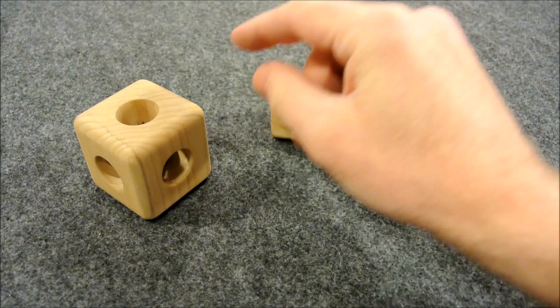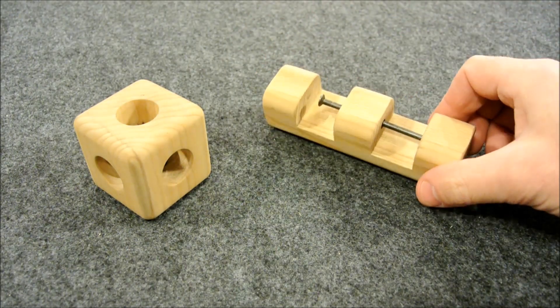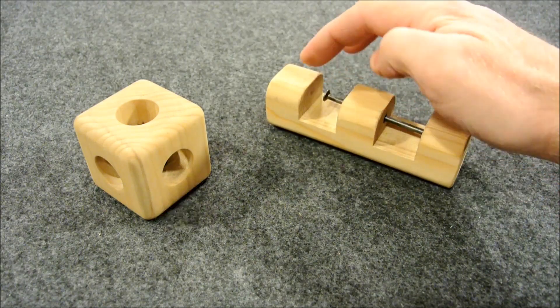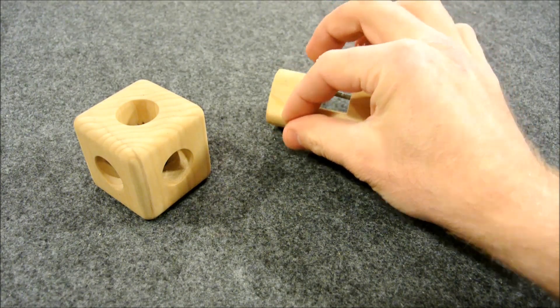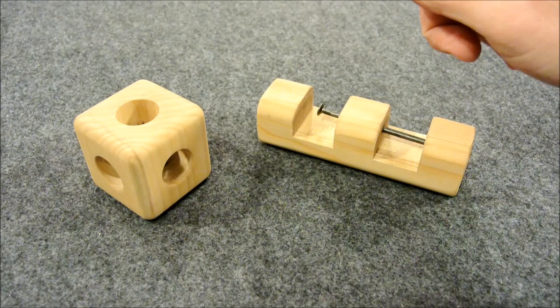And now, spoiler alert, this one is done by boiling the wood. It changes the properties, as I've mentioned, and it allows you to compress this portion with a vise, and then squeak the nail in.